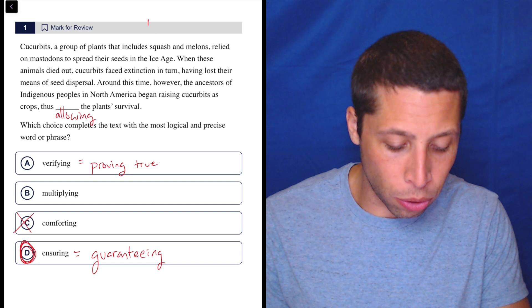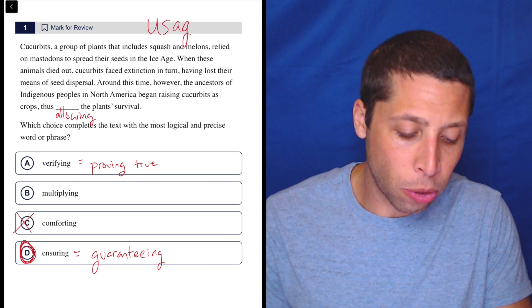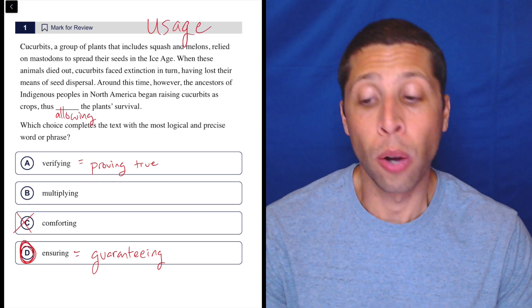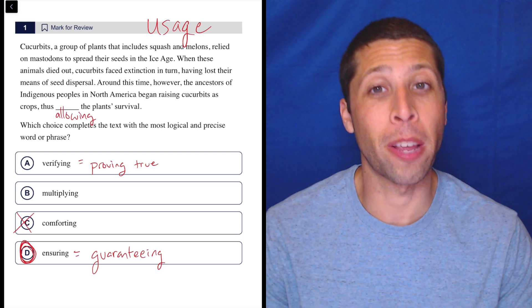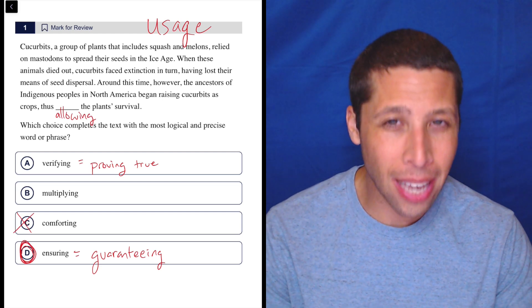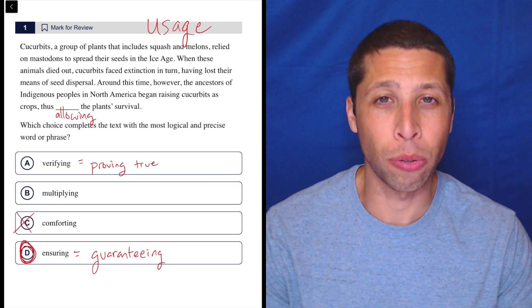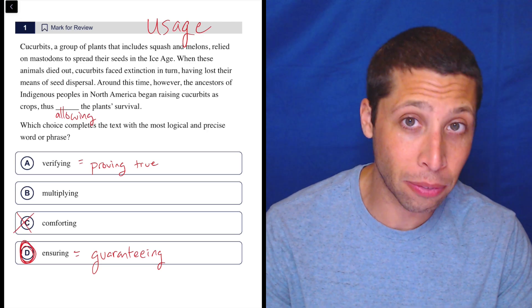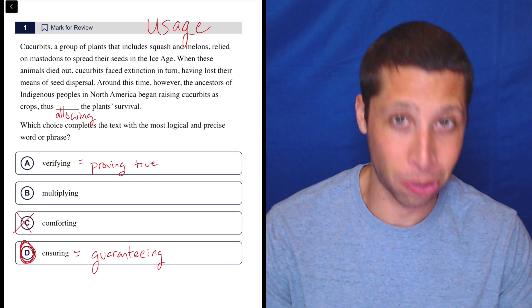So maybe this is getting to the idea of usage, which is one of the more frustrating things that we'll encounter on the SAT vocab, where words might have very similar definitions. They might overlap. They might make some sense, but really it just comes down to certain words cannot be used in certain situations. So you can ensure a plant's survival, but you can't verify a plant's survival.